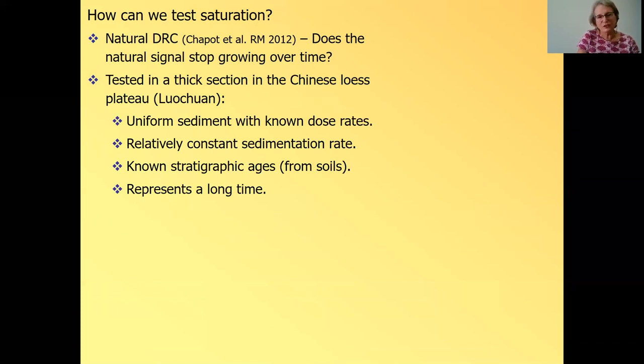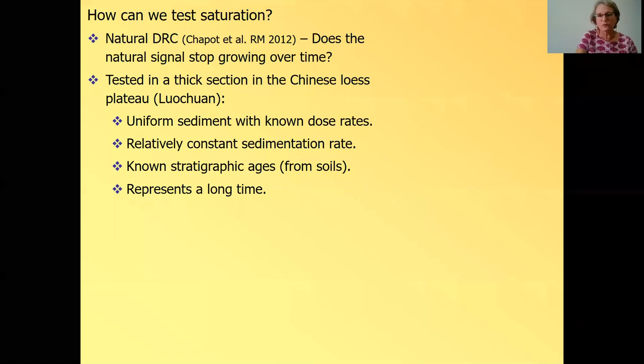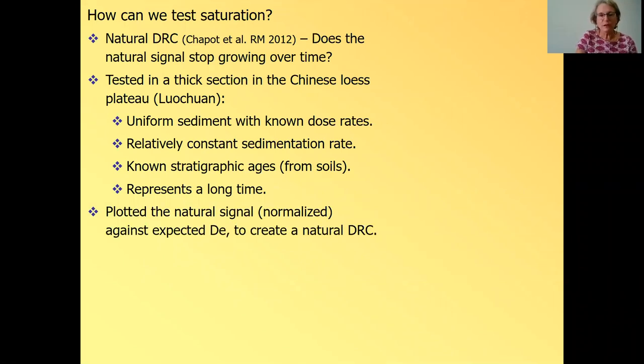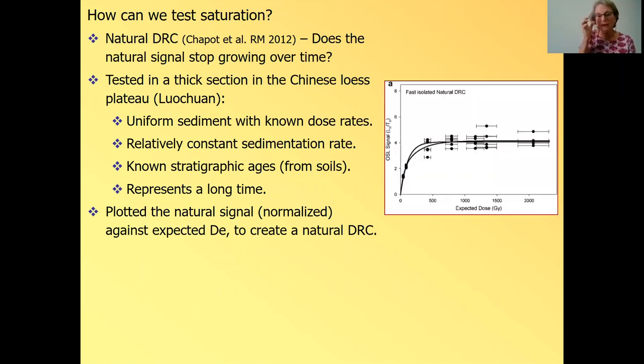In 2012, Chapot et al. published the concept of natural dose response curve to check when, in nature, when does the signal stop growing? And it was tested in one of the thick loess sections in China. It's in a place called Luochuan. And the advantage of such a section is that it's uniform sediment with known dose rate. So the dose rate is uniform throughout the section. The signal will grow in a uniform rate, also constant sedimentation rate. The stratigraphic ages are known from soils. They can correlate soils to interglacials and they represent a long time. So they plotted the natural signal from this section of loess against the expected dose.